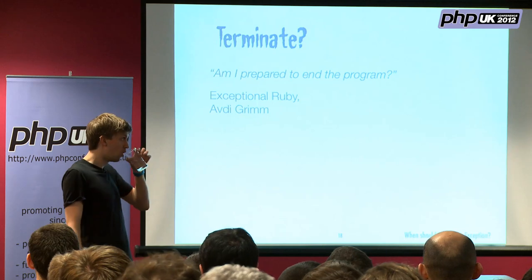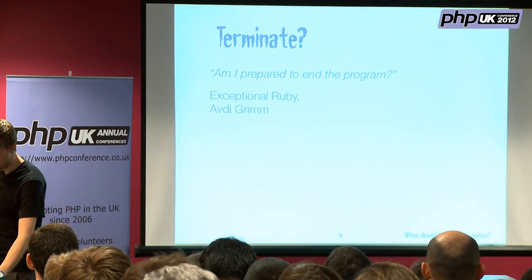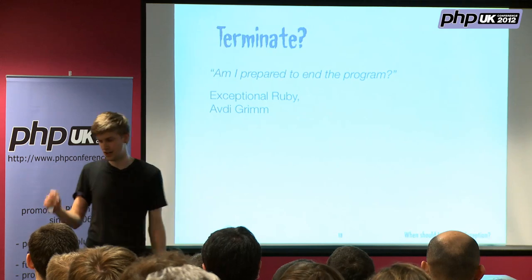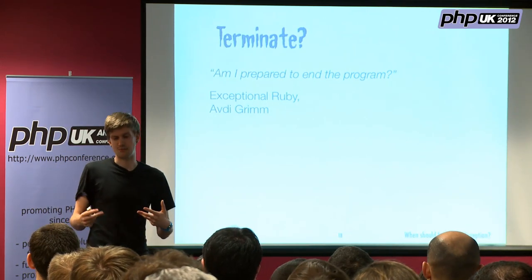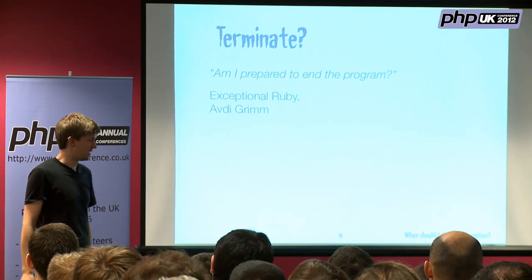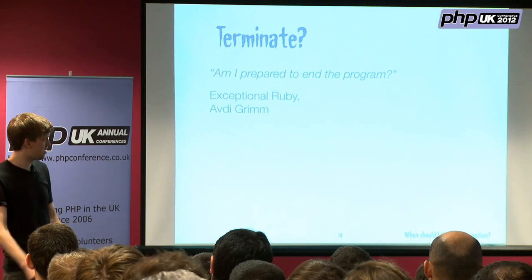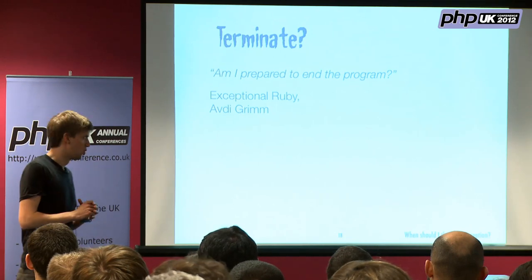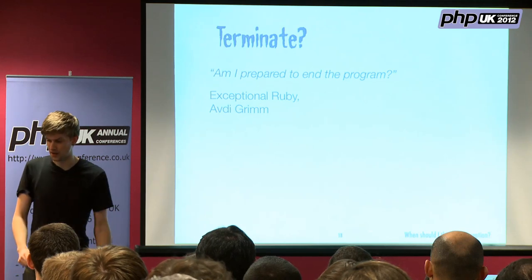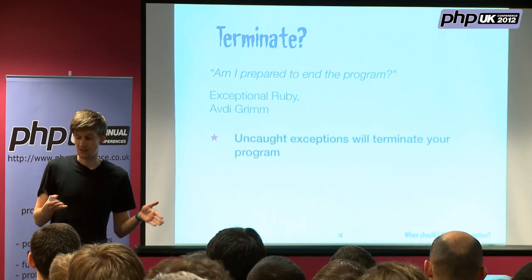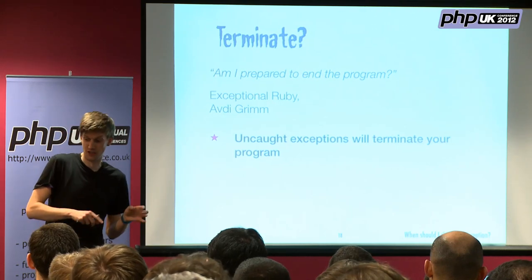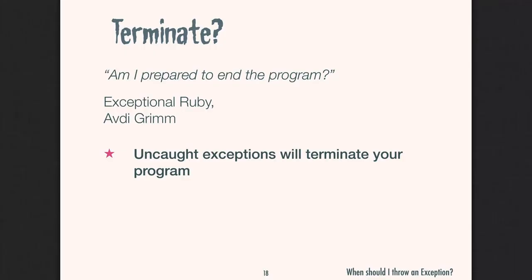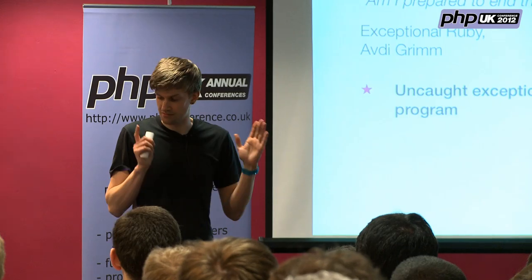Another question: am I prepared to end the program? Avdi Grimm is a Ruby developer who wrote a book called Exceptional Ruby — an awesome book, even if you aren't a Ruby developer, covering more conceptual ideas about exceptions and failure handling. One of the most useful things from that book was this question: am I prepared to end the program? Because uncaught exceptions will terminate your program. It's a simple thing to ask just as you're about to type 'throw new' — do you know what, am I actually ready to terminate? Am I really ready to type die()? I found that very useful.